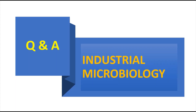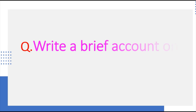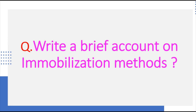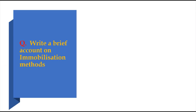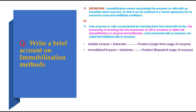In this series of question and answers from industrial microbiology, we are going to discuss one more question: write a brief account on immobilization methods. Immobilization of any cell or enzyme can be defined as the process of arresting the free movement of the cells or enzymes. If you are arresting the cell, it is called cell immobilization.